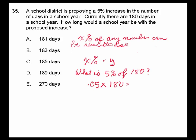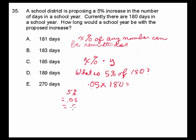x% of any number can be rewritten as x% times y. In this problem, we want to know what is 5% of 180. So that's rewritten in words, and in expression form: what is 5% of — multiplied by — 180? That's what you punch into your calculator to find the result. And just to remind you, 5% can be rewritten as 0.05, or as 5 over 100.